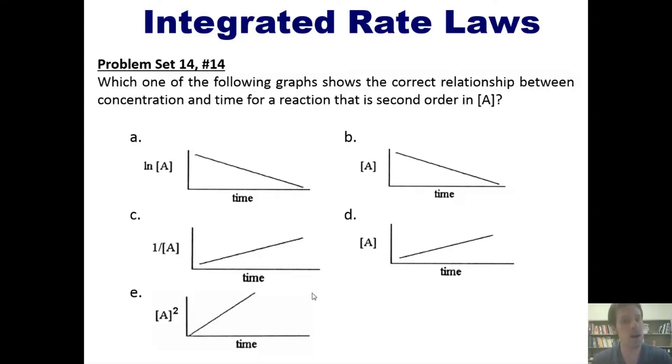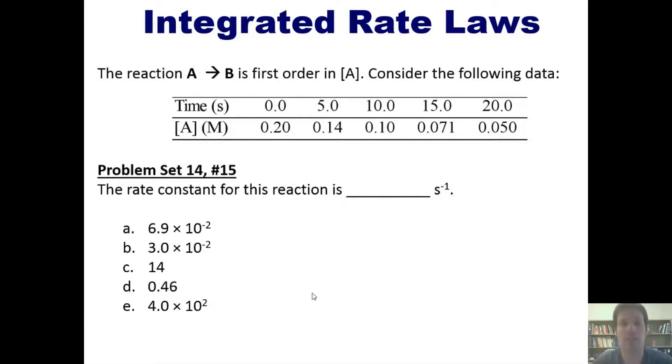That takes us then to another question. The reaction A going to B is first order in A. Consider the following data. What is the rate constant for this reaction? You can pause the video now, see if you can figure it out on your own. You can then click this link to watch me solve it on the whiteboard.